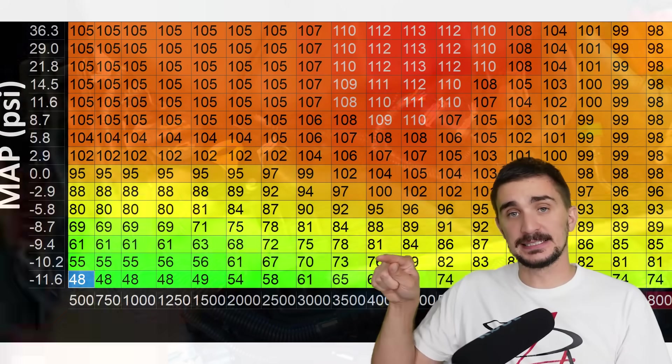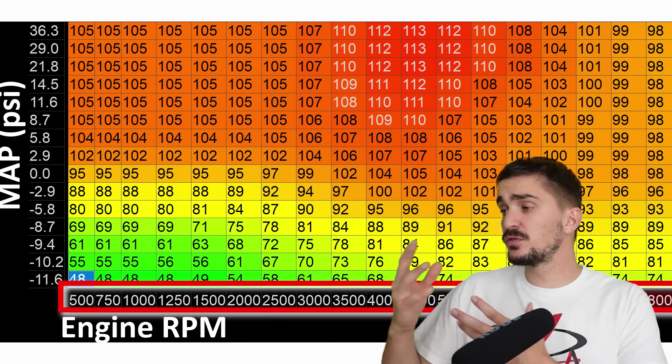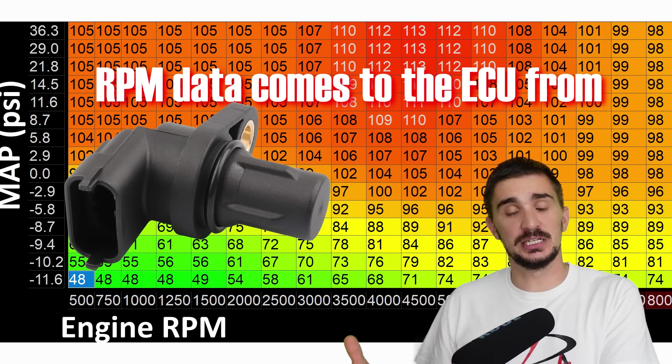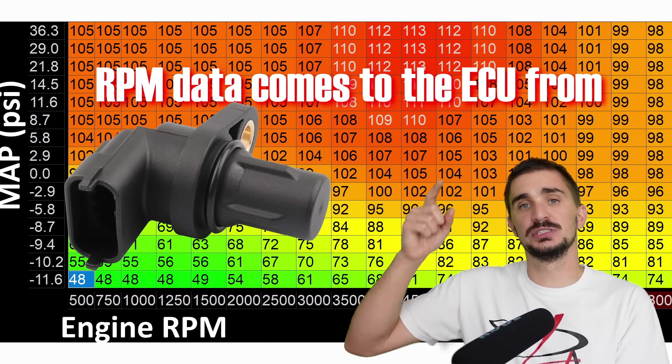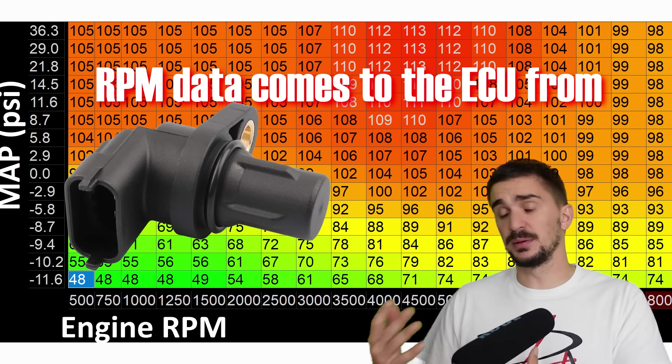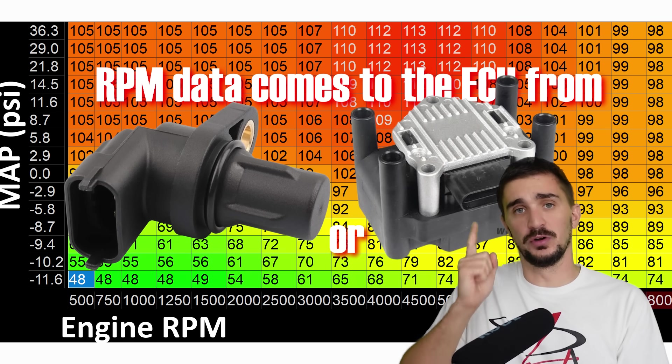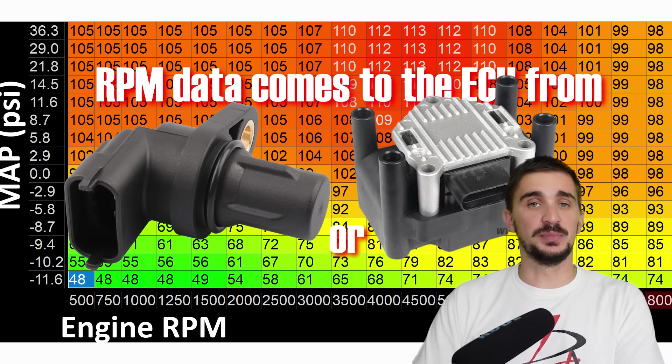Our horizontal axis is engine RPM, or rotations per minute. This data can come to the ECU from something like a crankshaft position sensor, which counts the number of engine revolutions and sends the data to the ECU. Alternatively, the data can also come from something like an ignition coil. The ECU registers the number of times the ignition coil fires, and based on this, it can calculate engine RPM.